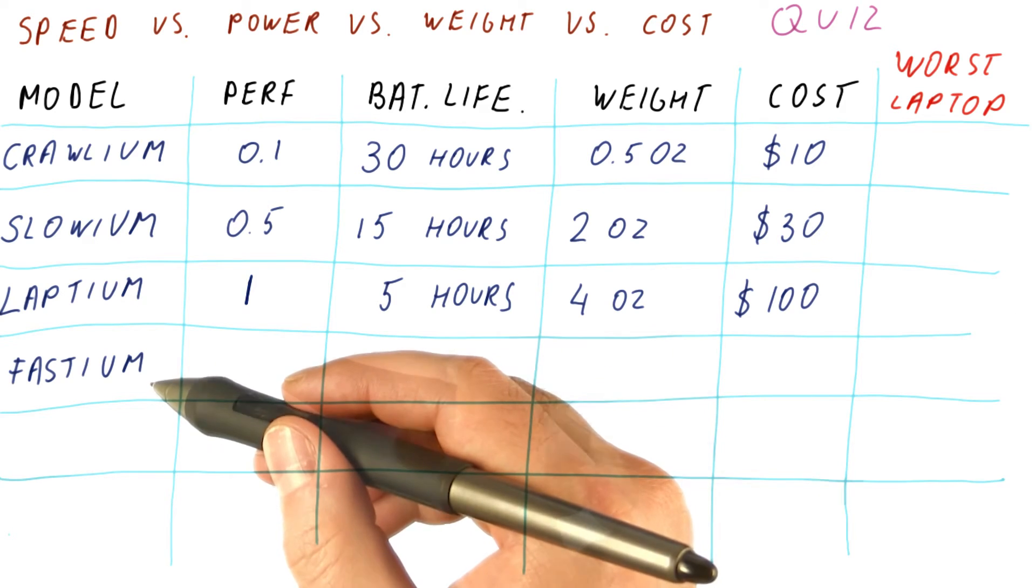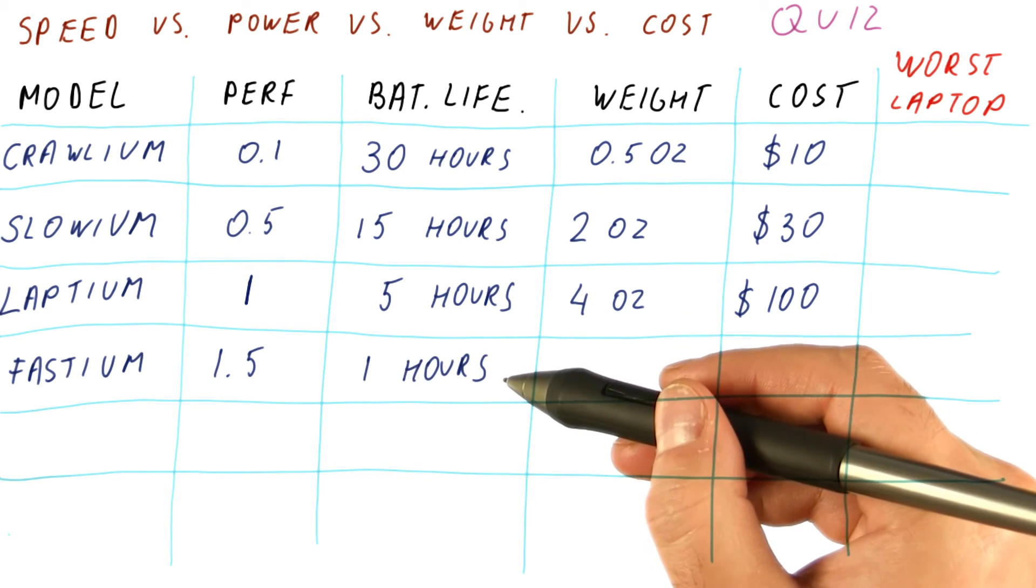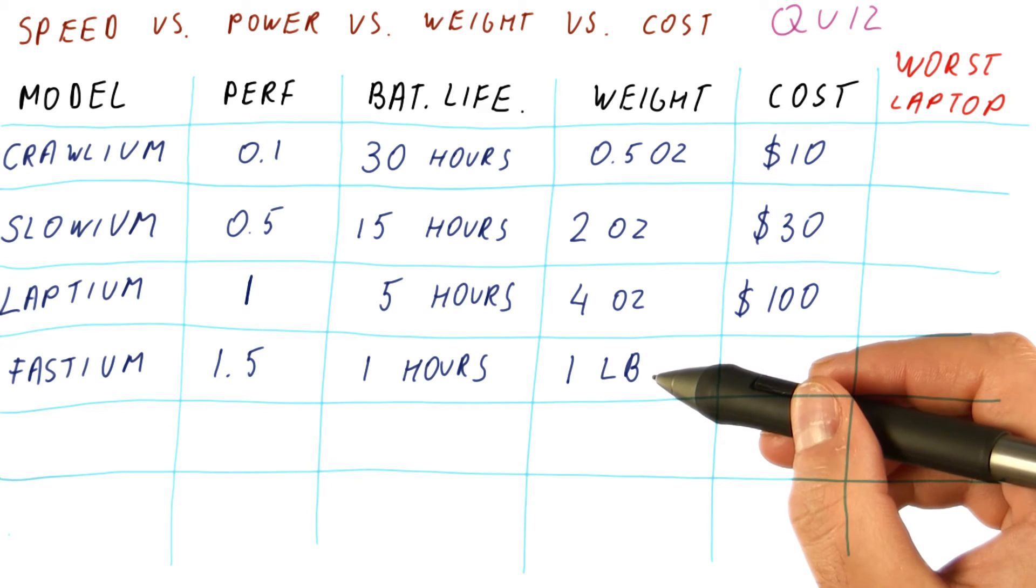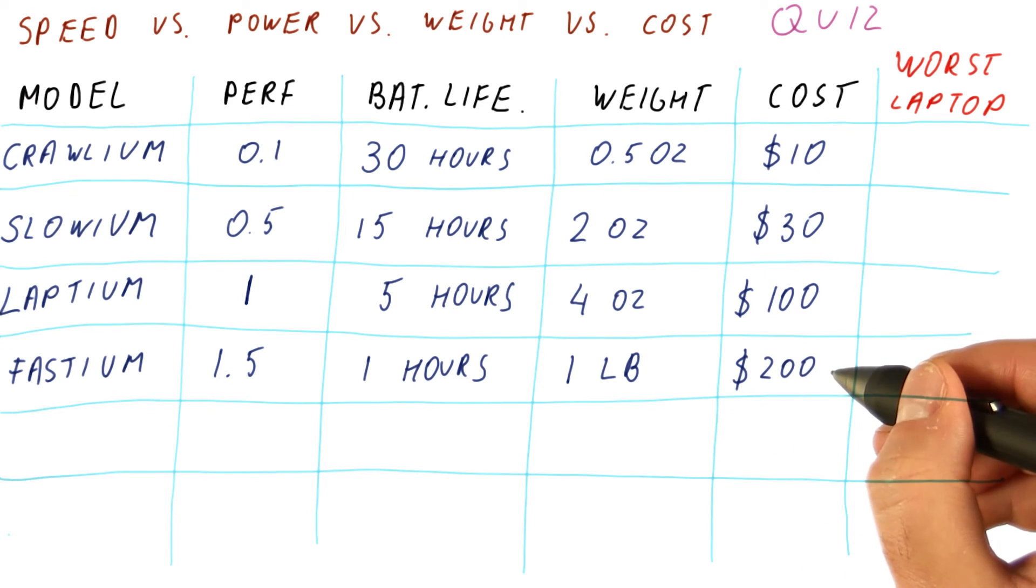Then we have the Fastium, which has more performance, significantly less battery life however. It's about one pound in weight, costs $200 for the processor.